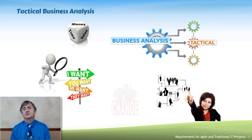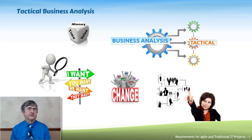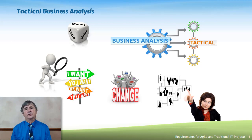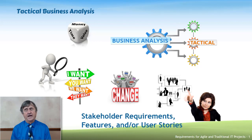This is also where we deal with change. In the tactical business analysis level, change is rampant, and that's why we have philosophies such as agile and lean, and methodologies like Kanban and Scrum, in order to deal with ongoing change throughout the project. The outcome of tactical business analysis is going to be stakeholder requirements if you're in a conventional project, or features and/or user stories if you're in a lean or agile project.